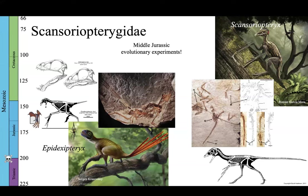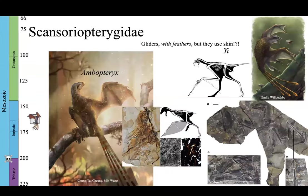What does it have to do with this story about Paravians and experimentation in gliding in the Jurassic? Well, there are some even weirder Scansoriopterygids. These two — one's called Ambopteryx and the other one's called Yi — are truly shocking. When these animals first came out, both only found in the last eight years or so, I was blown away.